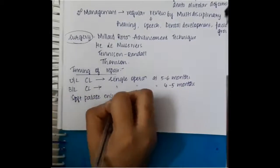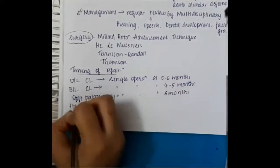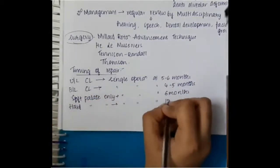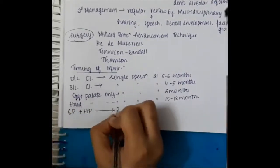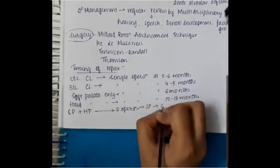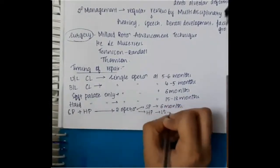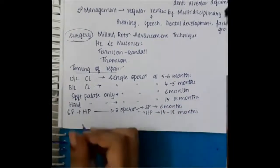If there is soft palate only, then single operation is done at 6 months. If there is hard palate only, then single operation is done at 15 to 18 months. If there is both soft palate and hard palate deformity, then you can do two operations. One operation for soft palate is done at 6 months and the second operation for hard palate is done at 15 to 18 months.